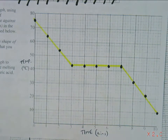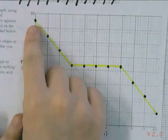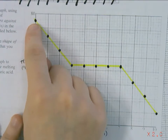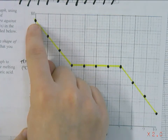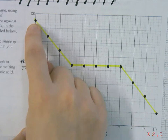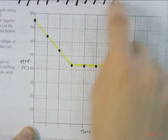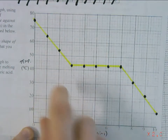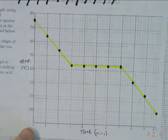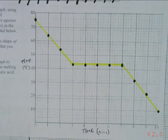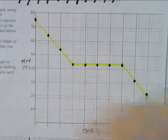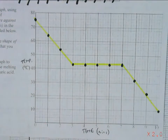The most common mistake is that people forget this point here — they always forget the one at zero for some reason. Don't forget: if it's in the table, there has to be a point on the graph. And explain the shape of the graph that you've obtained — so explain this again to me, David.